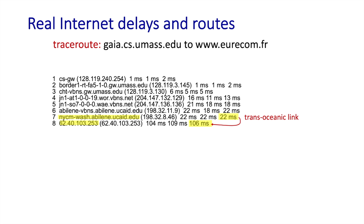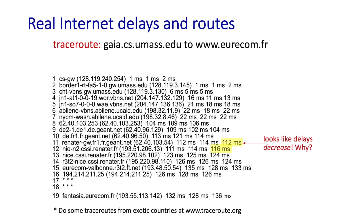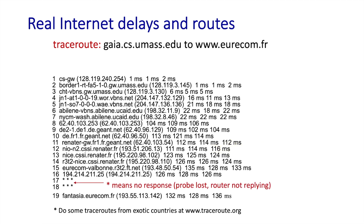Looking at the difference between 22 milliseconds to reach DC and 105 milliseconds to reach France, you can see the effects of propagation delays across the Atlantic Ocean. Sometimes the measured RTT decreases even though packets travel further, and that's because the congestion level and queuing delay upstream can change over time. Lastly, we'll sometimes see stars — this is from a router that refuses to reply to a Traceroute message, so an RTT measurement can't be made.